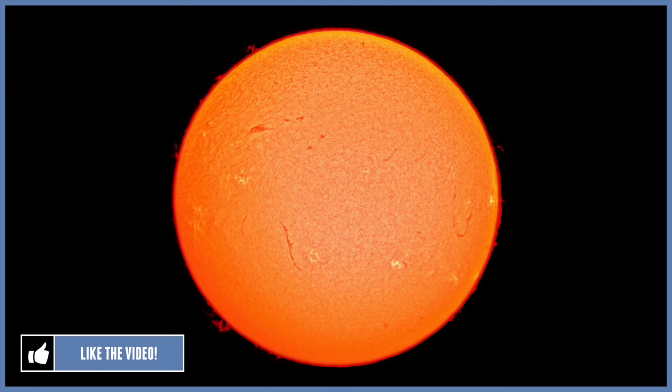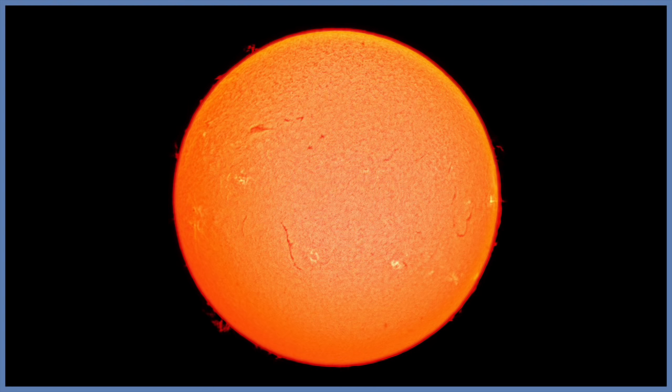So the sun contains most of the mass in the solar system, and this is quite critical. The sun stands apart from all the planets because it's the only object in the solar system where nuclear reactions are really occurring.